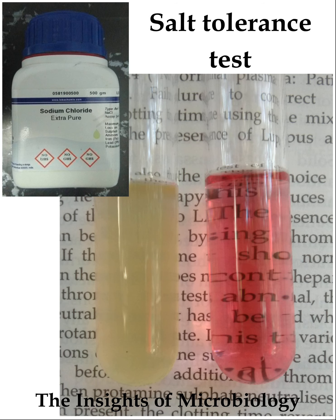As mentioned, the main aim of this test is to differentiate Enterococci species from Streptococci species, especially Streptococci bovis and Streptococci viridans, as both species exhibit positive results on a bile esculin screen test and have similar colony morphology on 5% sheep blood agar.